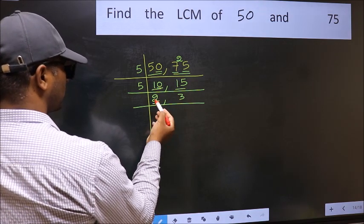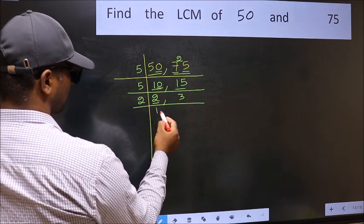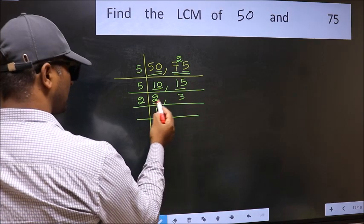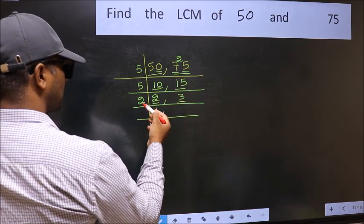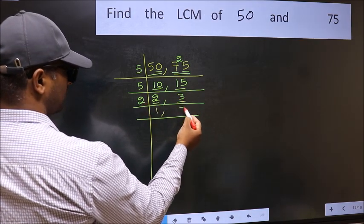Now here we have 2. 2 is a prime number, so 2 once is 2. The other number 3, not divisible by 2, so you write it down as it is.